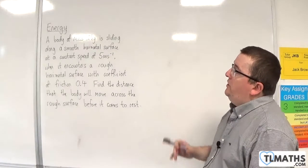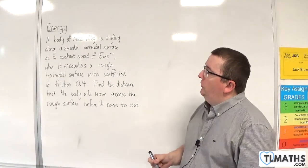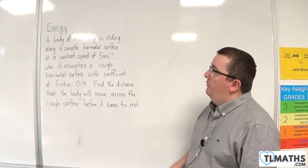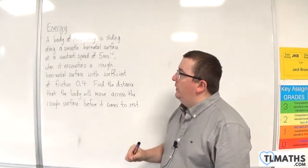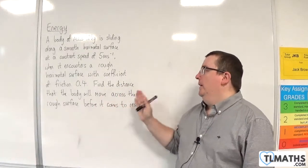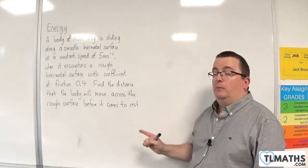In this problem, we have a body of mass 12 kilos sliding along a smooth horizontal surface at a constant speed of 5 metres per second. When it encounters a rough horizontal surface with coefficient of friction 0.4, find the distance that the body will move across the rough surface before it comes to rest.